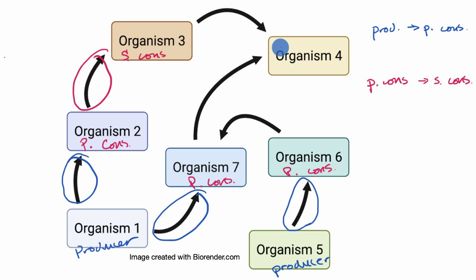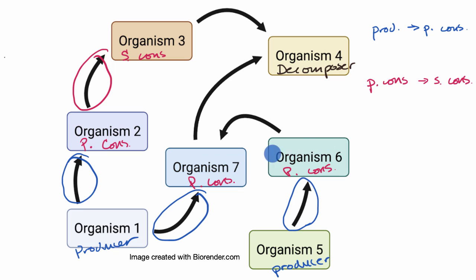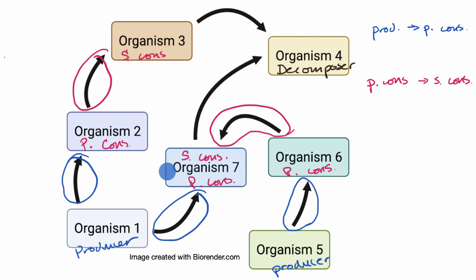This arrow over here is interesting — it's a secondary consumer being consumed, but you can see that organism four only has arrows going into it, which is a pretty good clue that this is a decomposer. So I'm not going to call organism four a secondary consumer. What about the arrow that goes from organism six to organism seven? That looks like primary consumer to primary consumer, but it turns out that something can be both a primary consumer and a secondary consumer. So this is also a secondary consumer, because it's eating a primary consumer and it's not a decomposer. So this is another example of an arrow from a primary consumer to a secondary consumer.